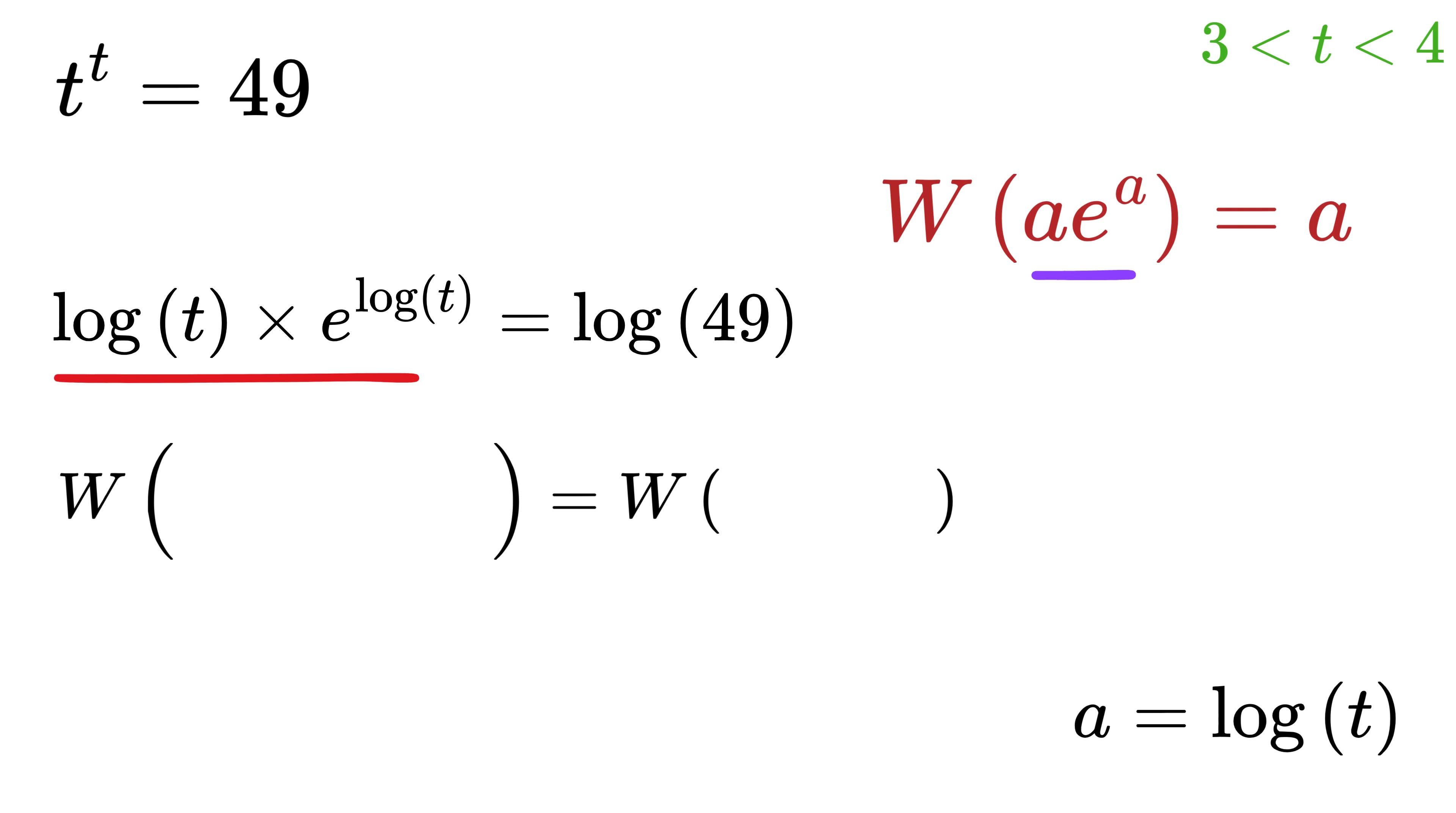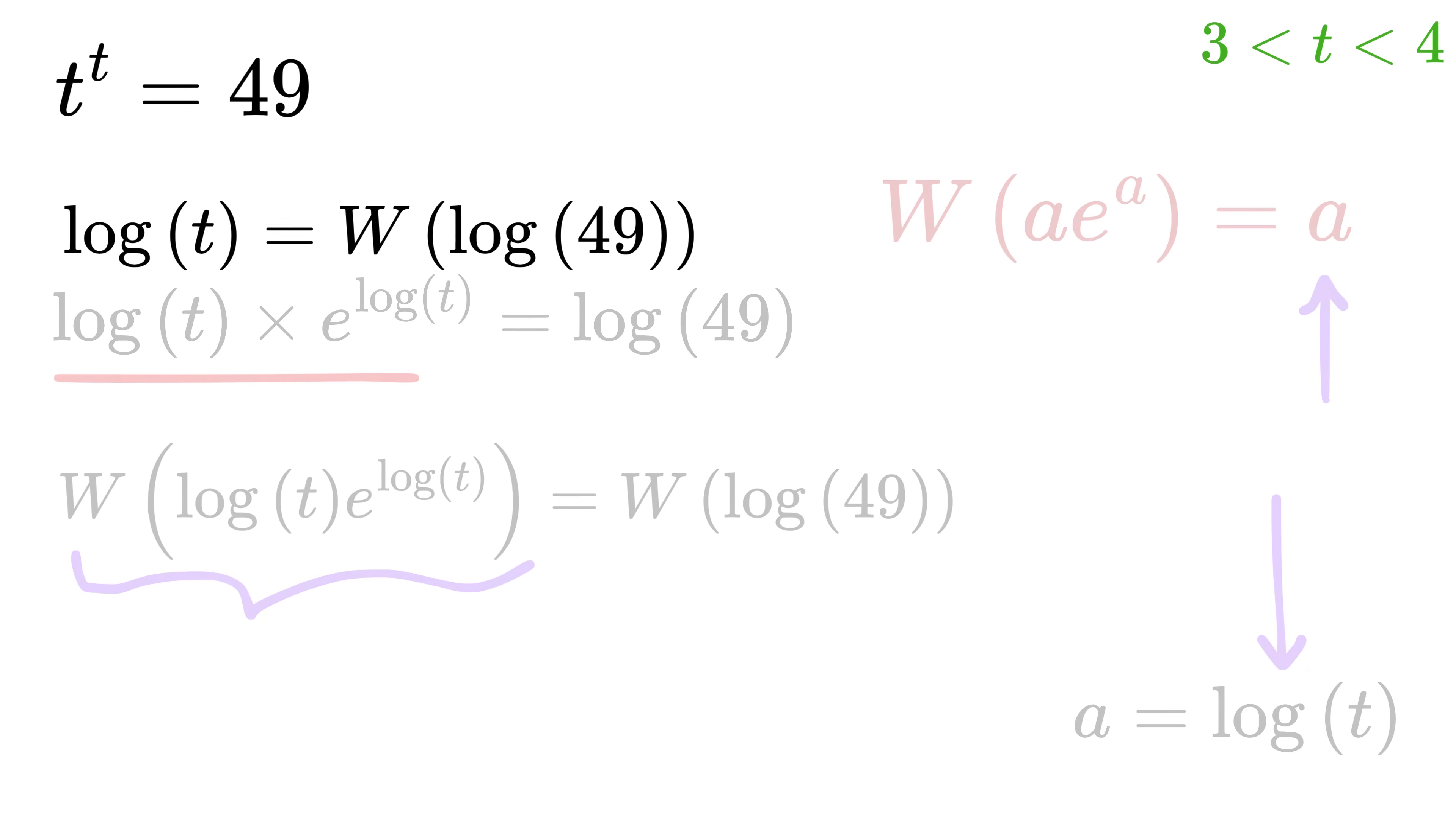This gives W of log t times e raised to the log of t equals W of natural log of 49. What will be the value of this function? This value will be the same as a, which will be the log of t itself, and this will be equal to W of log of 49.